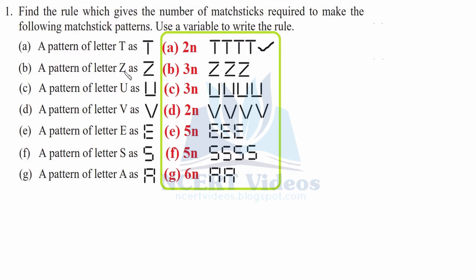Now, part B: pattern of letter Z as shown. So we will count 1, 2, 3. So 3 matchsticks are required to make the pattern of Z. In order to make 3 of them, we will require 3 times 3, which is 9. If we count them, they will be 9 matchsticks. When we put into formula 3 times 3, we get 9 matchsticks.